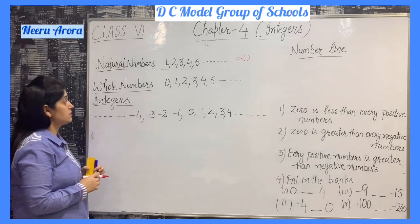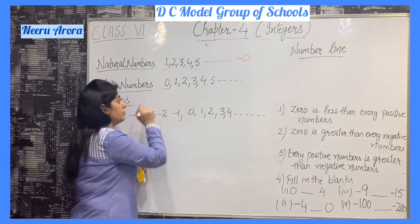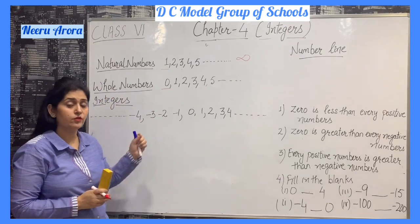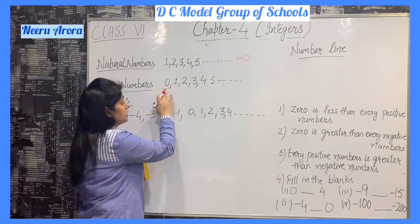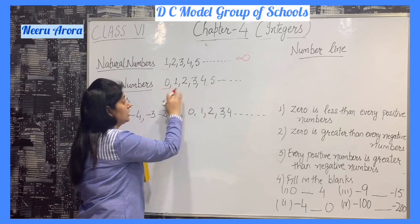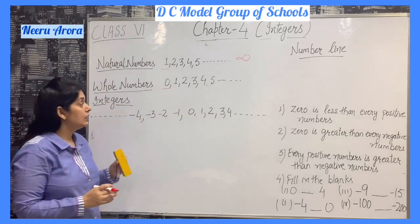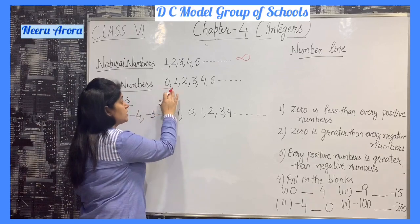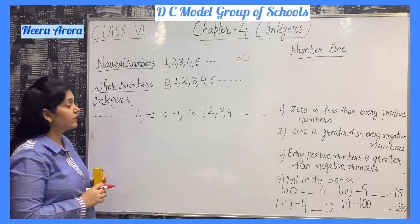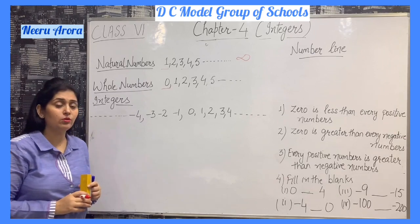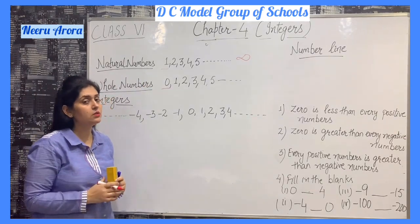Now, whole numbers. Natural numbers with 0 — whole numbers begin from 0. Natural numbers including 0 are known as whole numbers. So whole numbers begin from 0, 1, and so on. The difference: natural numbers begin from 1, whole numbers begin from 0.